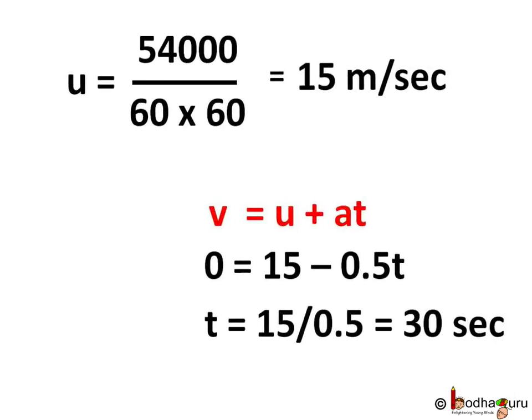Acceleration is in meter per second square, so we convert the initial velocity to meter per second form. 1 km is equal to 1000 meters, and 1 hour is equal to 60 into 60, that is 3600 seconds. So u is equal to 54000 meter divided by 60 into 60 seconds, which comes out to be 15 meter per second.